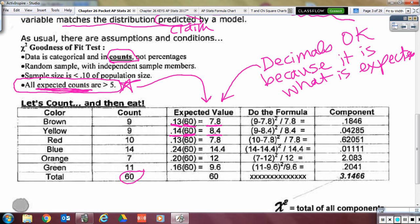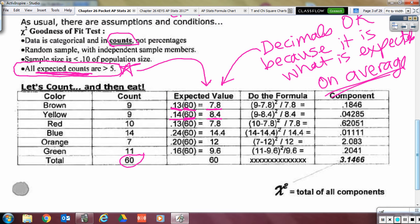Meaning if I collected a whole bunch of samples of size 60, you got a cup of 60 M&M's and you got a cup of 60 M&M's and you got a cup of 60 M&M's, then on average, y'all would get 7.8 brown M&M's in your samples of 60 M&M's because those are what you expect on average. Now, we're going to talk about the formula and these components and this chi-squared number here shortly, but we're going to go ahead and collect data now.